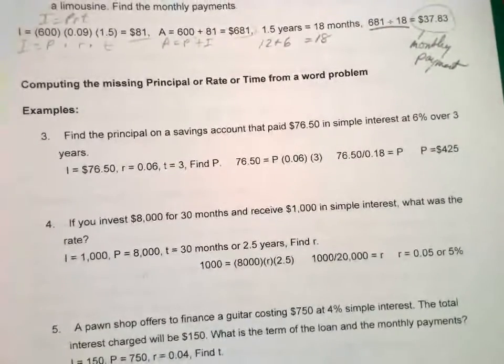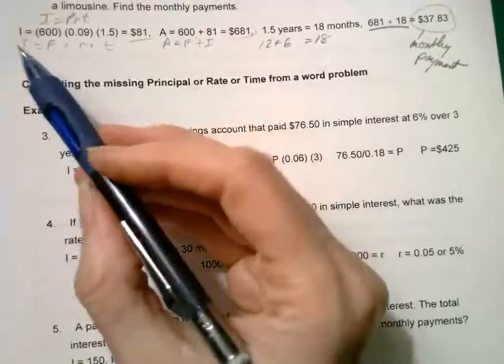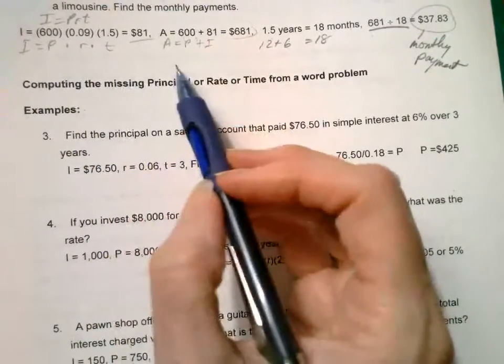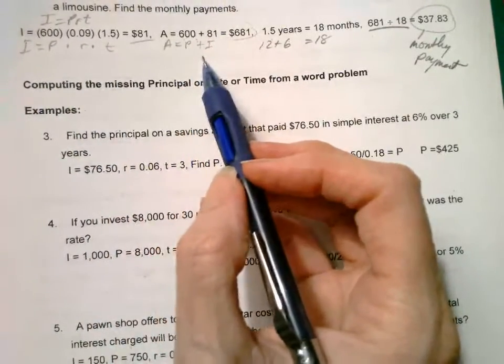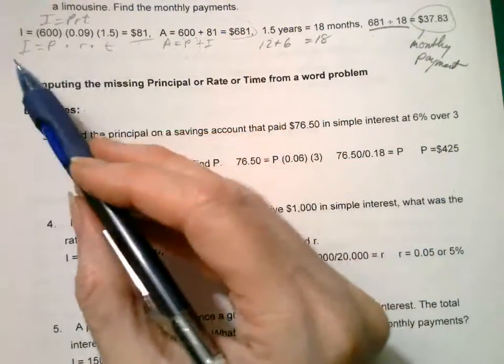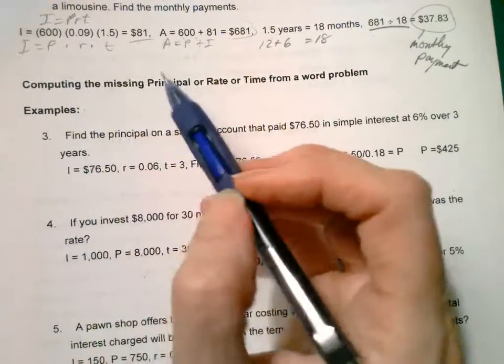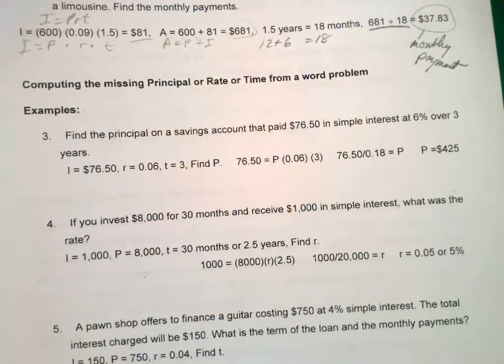Computing the missing. So if you have I equals PRT or you have A equals P plus I, any one of these variables could be missing. So should be able to find anything that's missing, not just the end amount.